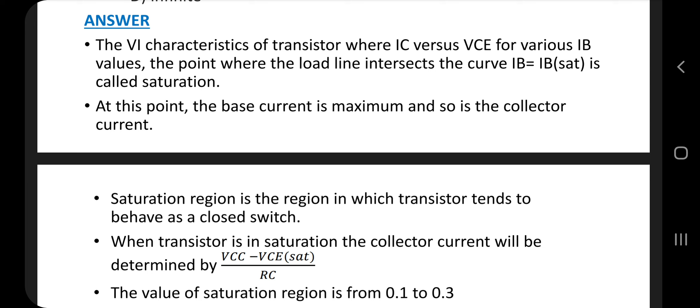Saturation region is the region in which transistor tends to behave as a closed switch. When transistor is in saturation, the collector current will be determined by VCC minus VCE saturation divided by RC. The value of saturation region is from 0.1 to 0.3.